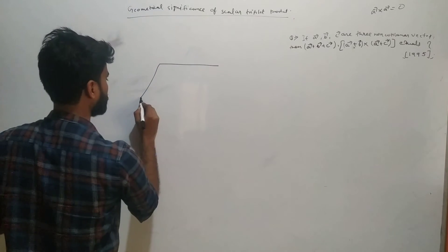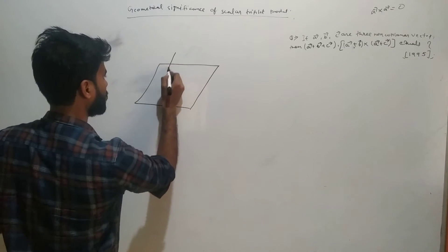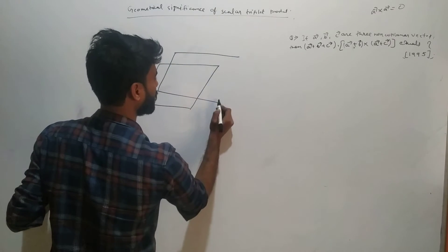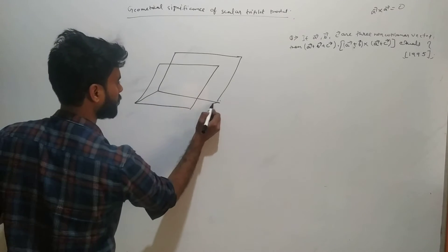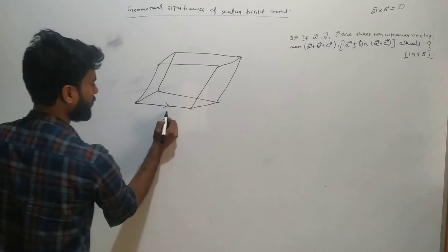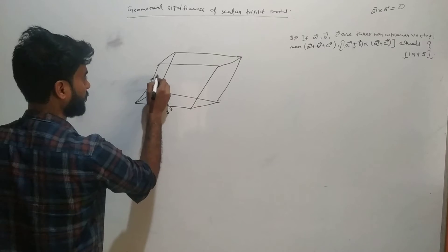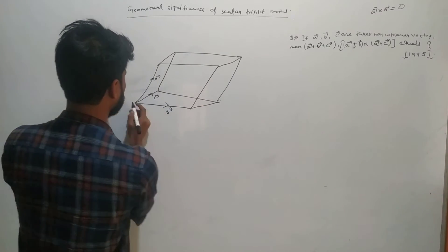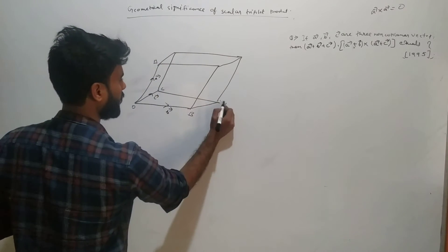Suppose this is vector b, this is vector c, and this is vector a. This is a parallelepiped. Suppose this is O, B, C, A, D.